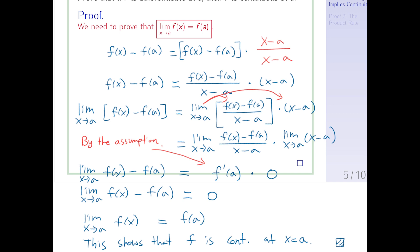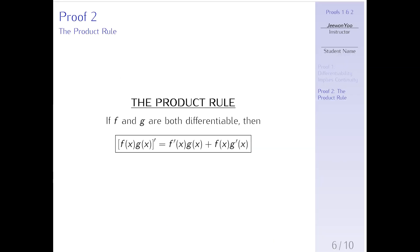Alright, thank you everyone. I'll come back and start proving the second one, which is proving the product rule. Welcome back students. The next one to prove is called the product rule. It states: if f and g are both differentiable, then the product of two functions (fg)' equals f'g plus fg'. Some people use different order, but it's basically the same thing. I'm going to stick with f'g plus fg'.